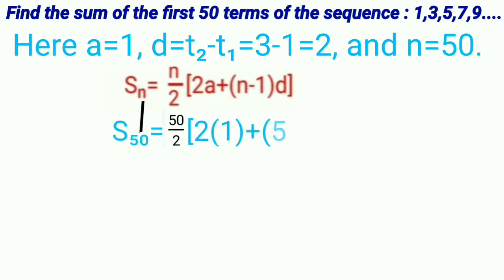S n is S 50, so S 50 is equal to 50 by 2 into 2 times 1 plus 50 minus 1 into 2. Here, a is equal to 1 and n is equal to 50, d is equal to 2.